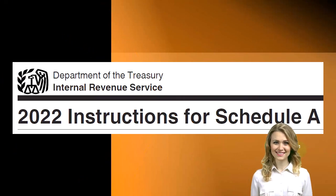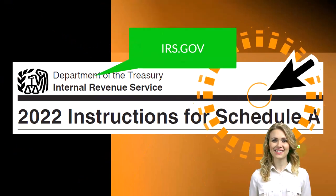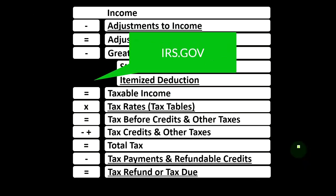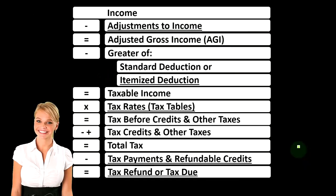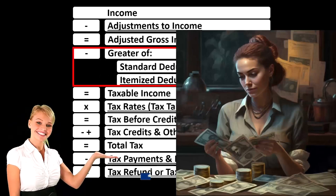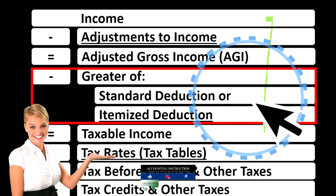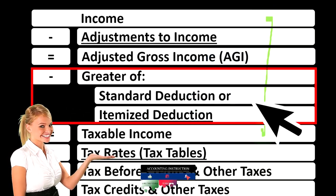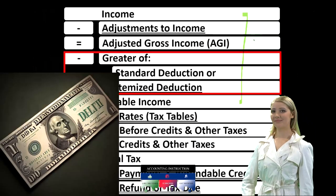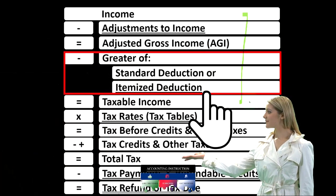Most of this information comes from the Schedule A 2022 instructions you can find online at irs.gov. Looking at the income tax formula, we're focused on itemized deductions. The first half of the income tax formula is in essence an income statement where we have income minus the deductions — the equivalent of expenses — equaling the equivalent of net income.